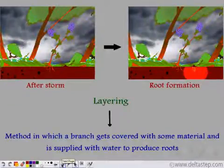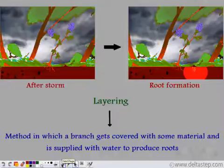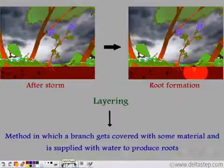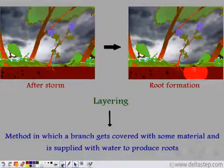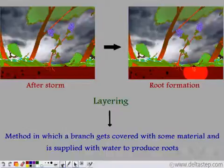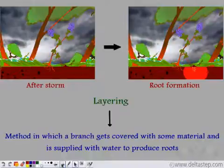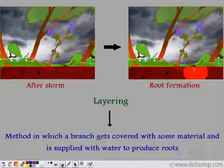So right after the storm, the branch fell on the ground, got buried under the soil, and slowly there was root formation, because of which the stem grew further and there was blooming of flowers. This process, in which a branch gets covered with some material like soil and is supplied with water, is known as layering.